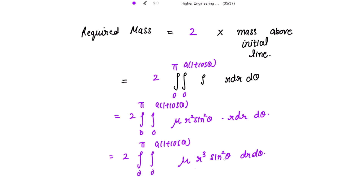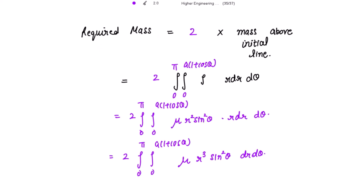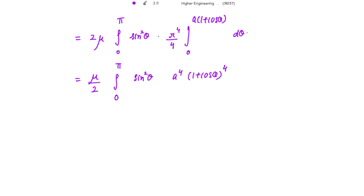Now we integrate with respect to R first. Mu and sine squared theta are constant for the inner integration. So taking mu outside, from 0 to pi, with sine squared theta constant, the integration of R cubed is R to the power 4 over 4, with limits from 0 to A(1 + cos theta) d theta. Taking 1 over 4 outside gives mu over 2, from 0 to pi, of sine squared theta times A to the power 4 times 1 plus cos theta to the power 4 d theta.